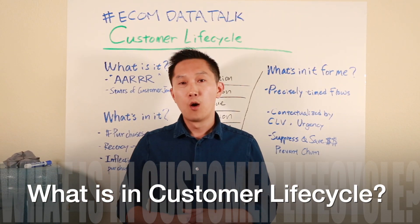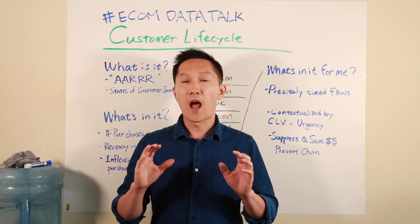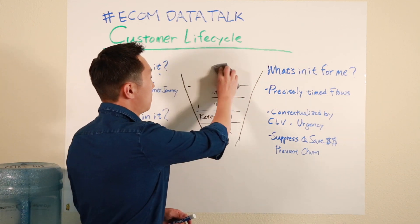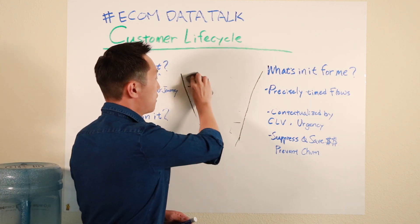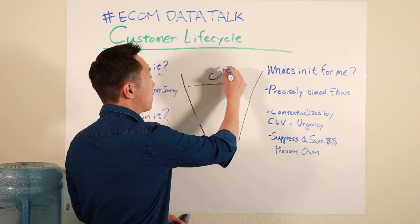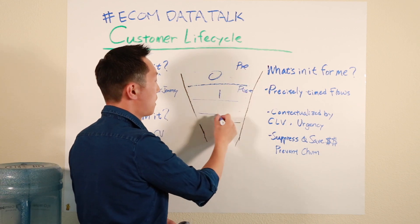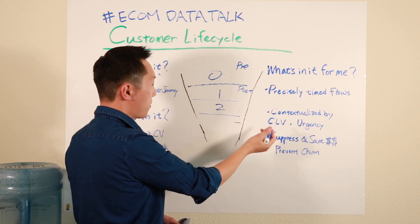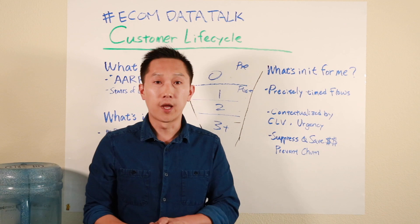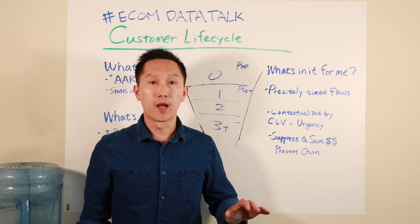So what goes into customer lifecycle? To make it come alive a bit more, let's first simplify it. We only focus on the stages after we've captured customers' emails. Then we can simplify it as this: think of pre-purchase and post-purchase. Starting with zero orders, which is pre-purchase, and then post-purchase you have one order — one-timers — two orders — repeaters — and three or more orders, your loyal customers. Forget about the AARRR framework and just think in terms of number of orders that they've previously made. It's as simple as it gets.